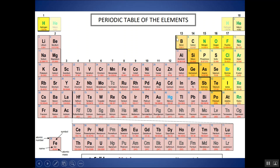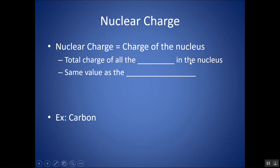Notice boron has an atomic number of five, carbon six, nitrogen seven, so on and so forth. Each element has a set number of protons. If it does not have six protons, it is no longer carbon, and so on and so forth.